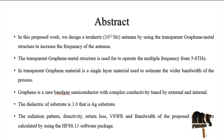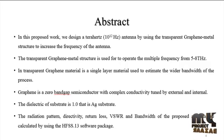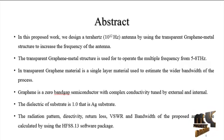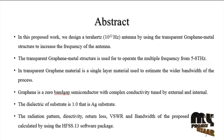Let us discuss the abstract. Graphene is an allotropic carbon in the form of a two-dimensional atomic-scale hexagonal lattice in which one atom forms each vertex. It can also be considered as an aromatic molecule — the ultimate case of the family of flat polycyclic aromatic hydrocarbons. Graphene has many unusual properties: it is about 200 times stronger than the strongest steel, and it conducts heat and electricity very efficiently, and is nearly transparent.